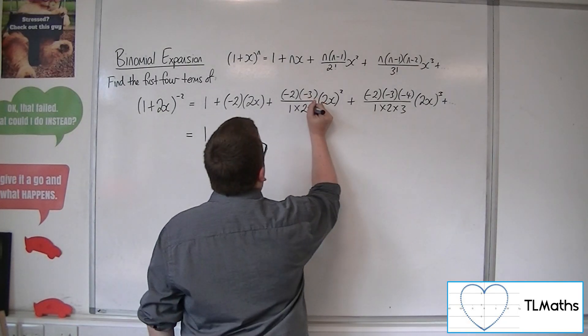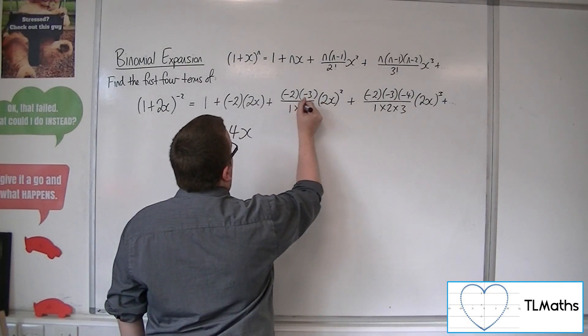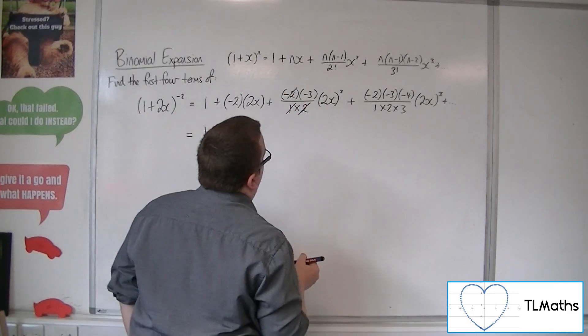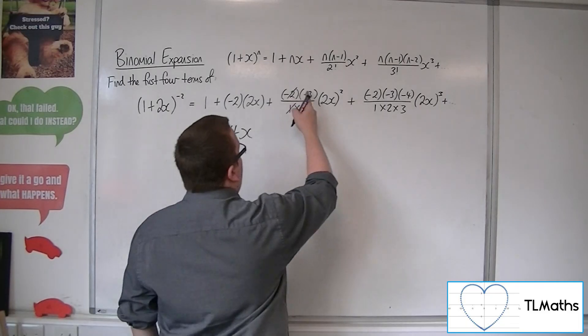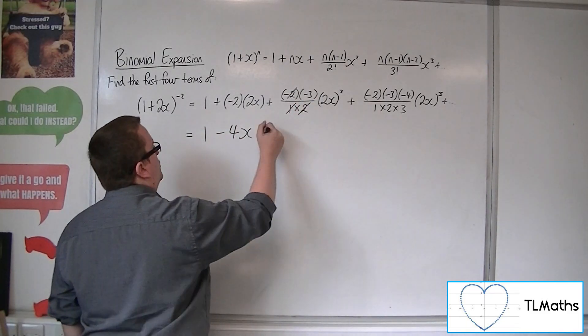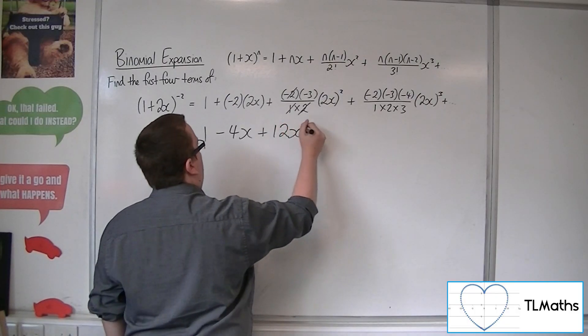Now here we're going to have that 2, and the 1 goes as well. The 2 can cancel with that 2 there, so we're going to have plus 3 there. We've got 2 squared, so 4. 3 times 4 is 12, so we're going to have 12x squared.